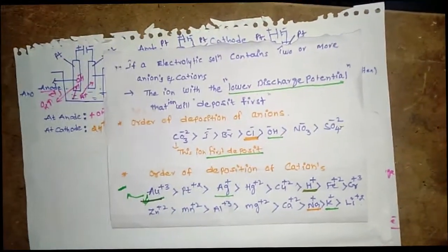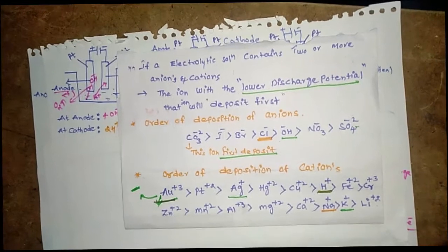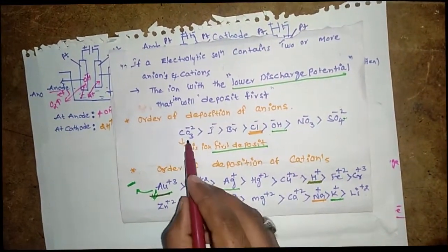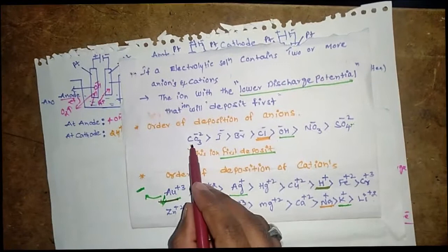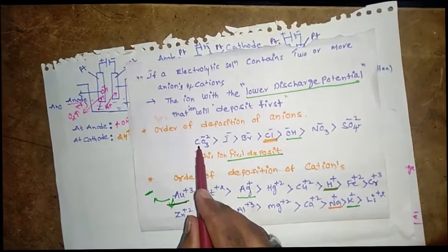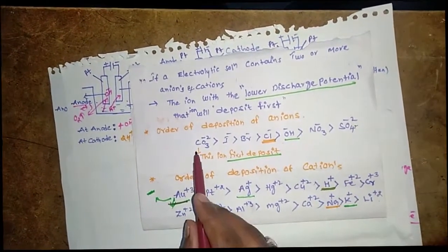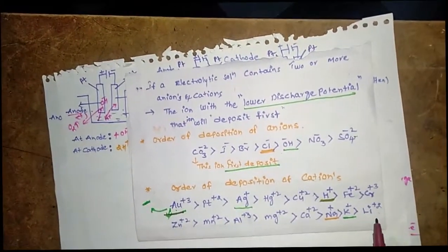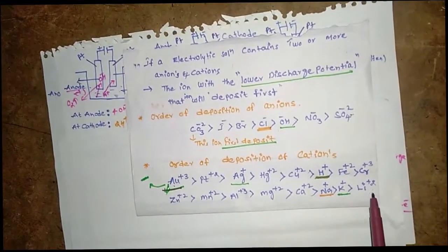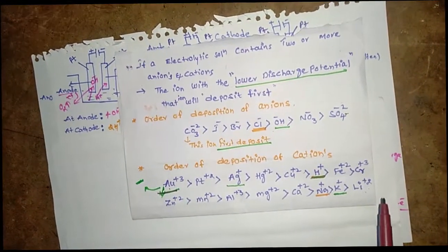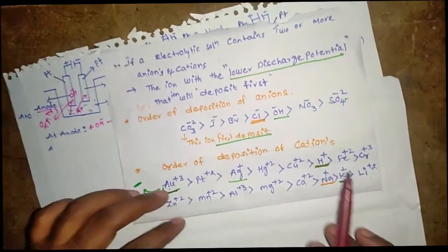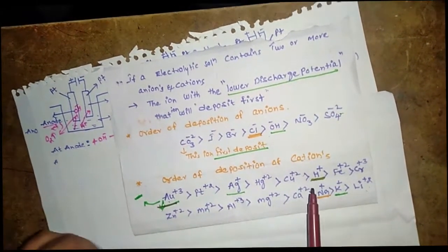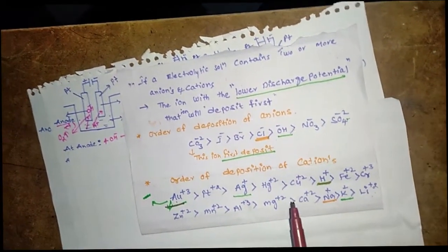Keep this in mind. Remember the anion and cation discharge potential series. The ion with the lower discharge potential is deposited first; the one with the highest discharge potential is deposited last. By remembering this chart, you can easily solve any given electrolytic separation problem.